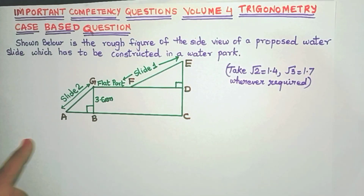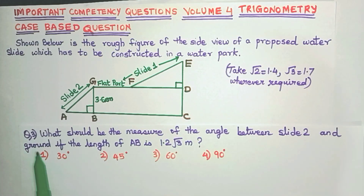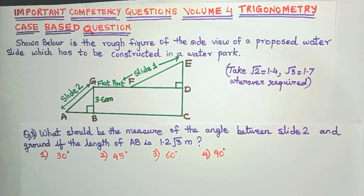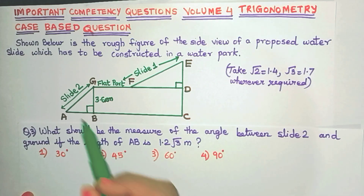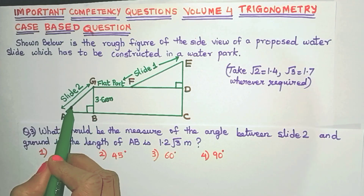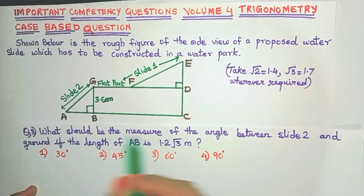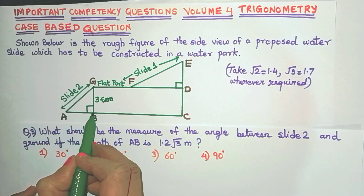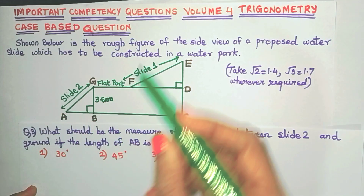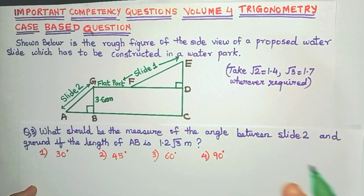The first question asks: what should be the measure of the angle between slide 2 and the ground, if the length of AB is 1.2√3 meters? Slide 2 is labeled in the diagram, and this is the ground. The angle between slide 2 and the ground is what we have to find. The data given is AB = 1.2√3 meters, and it's already given in the diagram that GB = 3.6 meters.